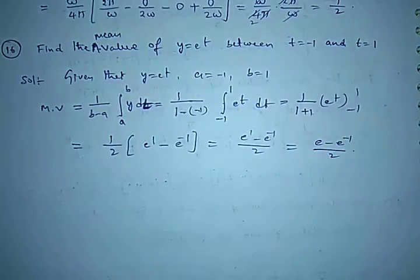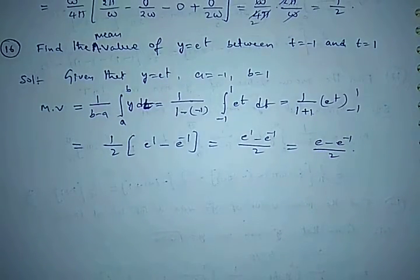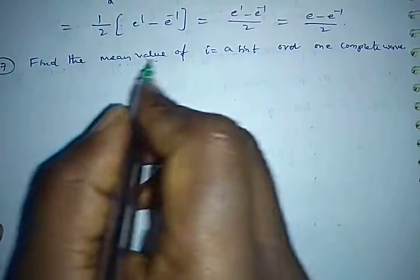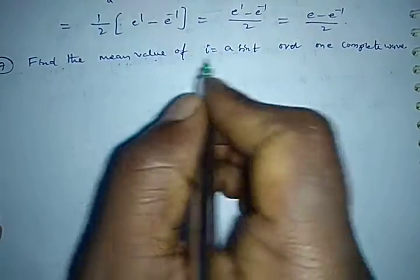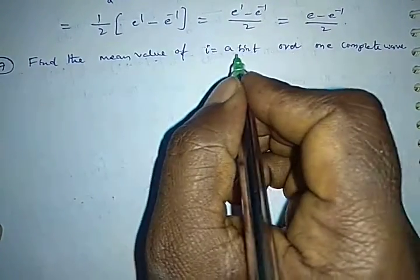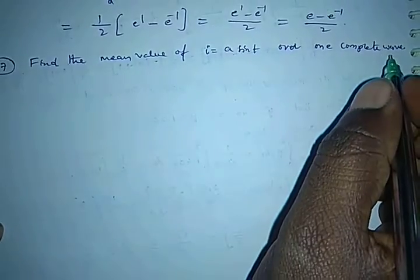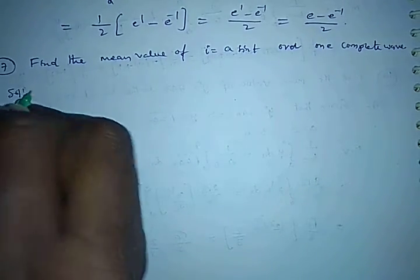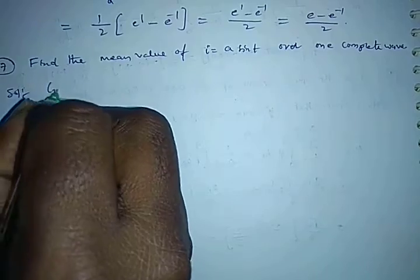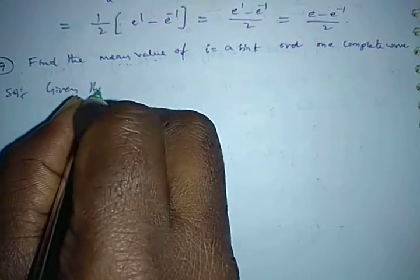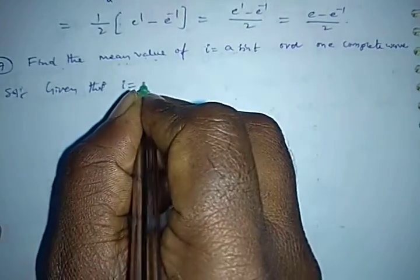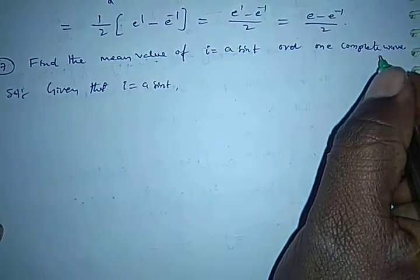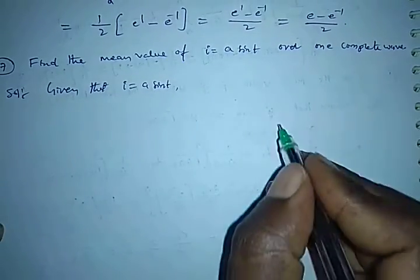Let us do another problem. In this problem, we have to find the mean value of i = a·sin(t) over one complete wave. Solution. First, write down the given data: i = a·sin(t) over one complete wave.